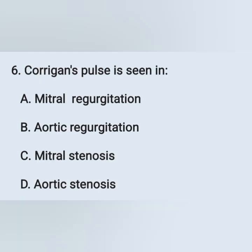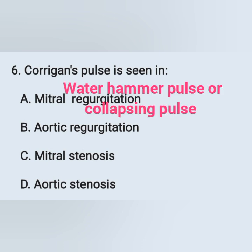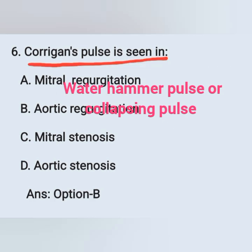Next question: Corrigan's pulse is seen in — option A: mitral regurgitation, option B: aortic regurgitation, option C: mitral stenosis, option D: aortic stenosis. Corrigan's pulse is also known as water hammer pulse or collapsing pulse, and it is seen in aortic regurgitation — option B is the correct answer.